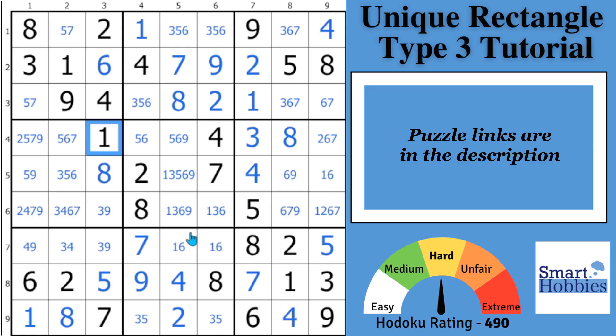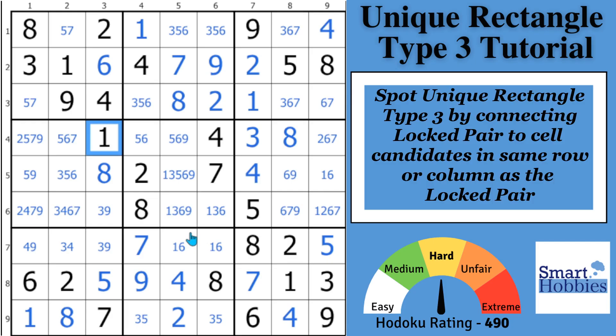An easy way to spot unique rectangle type 3, just like a 1, 2, or even a 4, is to look for a naked pair that is locked, which means it's in the same block and either the same row or column. For example, you have a naked pair here in block 1 of a 5-7, but it's not in the same column or the same row, so you cannot use this to find a unique rectangle.